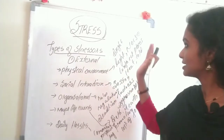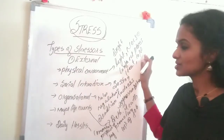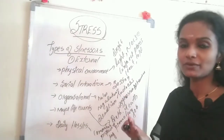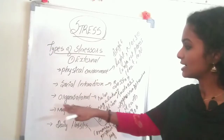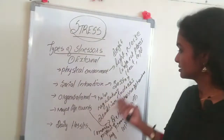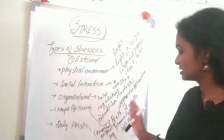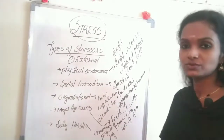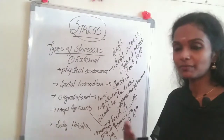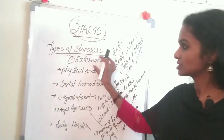To summarize external stressors: physical environment — bright light, noise, confined places, heat, cold; social interaction — bossing, rudeness, aggressive behavior; organizational — rules, regulations, excessive demands, and deadlines for projects; major life events — birth, death, promotion, loss of job; and daily hassles — commuting, misplacing keys, or breakdown of mechanical things.